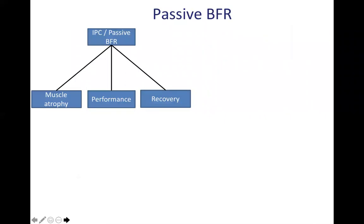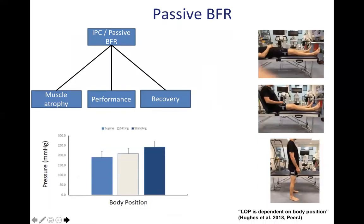The final method I'll discuss is passive blood flow restriction. A schematic on screen shows three different ways it can be useful: muscle atrophy, which I won't cover, enhancing acute performance, and recovery. One important point is to apply pressure using a device that can measure limb occlusive pressure, as body position changes limb occlusive pressure. This measurement should be used rather than arbitrary pressures, because a lot of passive BFR and ischemic preconditioning work uses arbitrary pressures rather than those based on limb occlusive pressure.